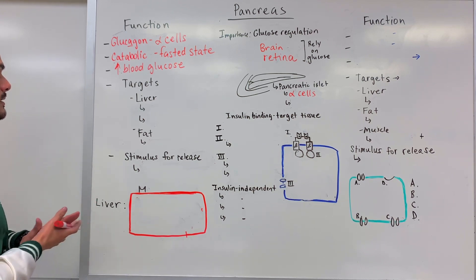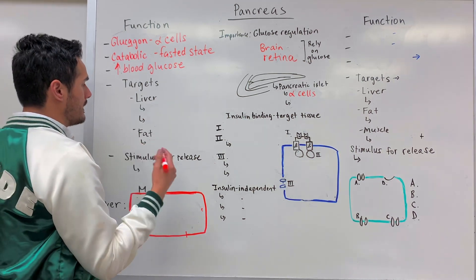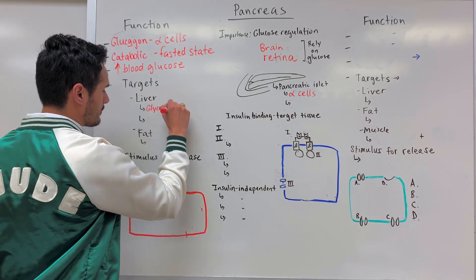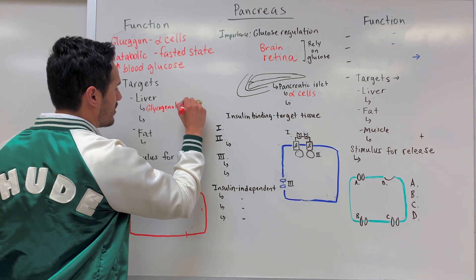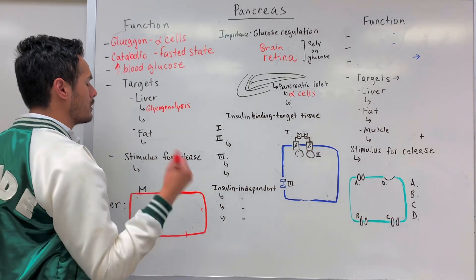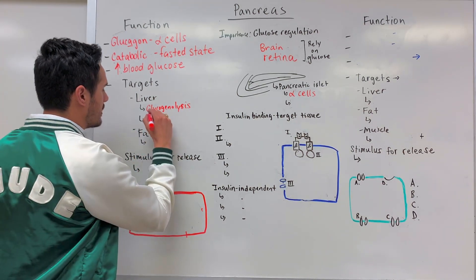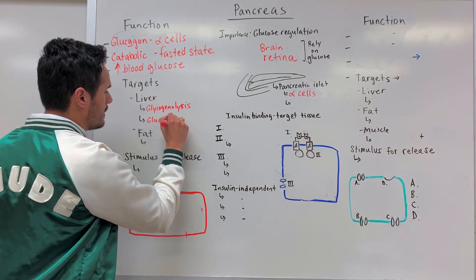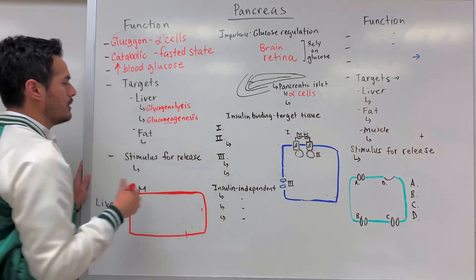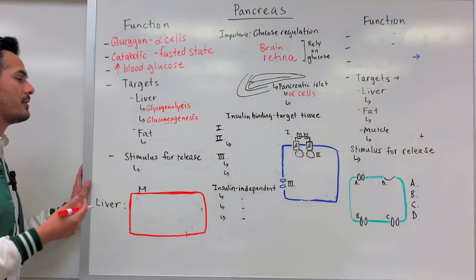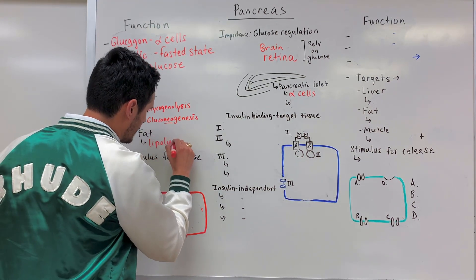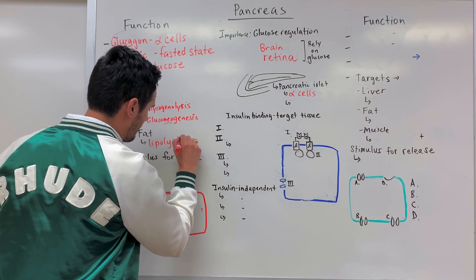Once glucagon binds, within the liver a process occurs known as glycogenolysis — a catabolic process in which we break down glycogen to get more glucose. There's also another process known as gluconeogenesis, where we form new glucose. Within the fat cells, lipolysis occurs — we use lipase enzymes to break fat down.